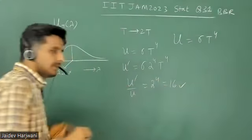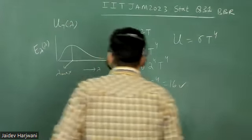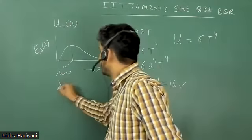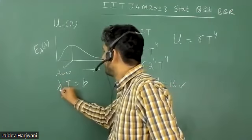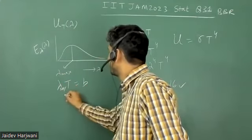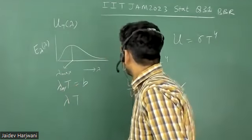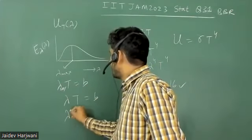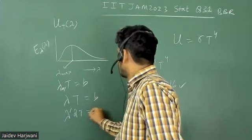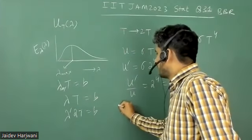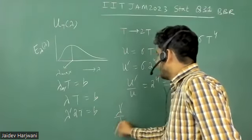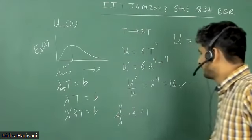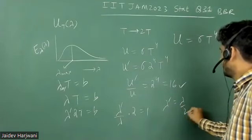And how this lambda max will shift, it will be seen by Wayne's law, which is lambda T is equal to constant. So, lambda max T is equal to constant. In first case, it is lambda T is equal to B. In second case, it will become lambda dash two T is equal to B. So, when I divide lambda dash by lambda into two is equal to one. So, lambda dash will become lambda by two.